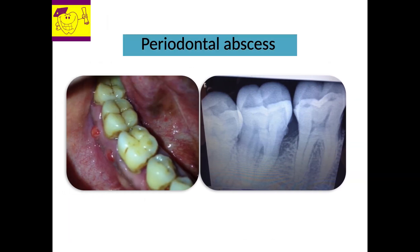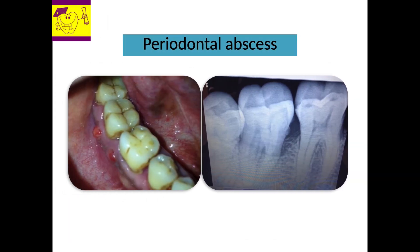Suppuration and pus formation in the periodontal region leads to an intraoral or extraoral swelling called a periodontal abscess. The tooth is free from dental caries, there is a deep periodontal pocket, pus discharge from the sulcus, mobility of the tooth, and radiographically it shows bone loss.